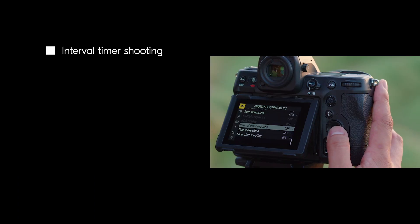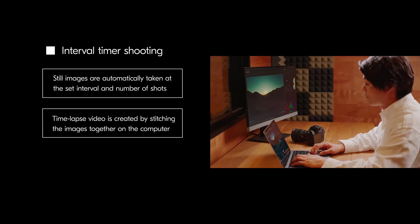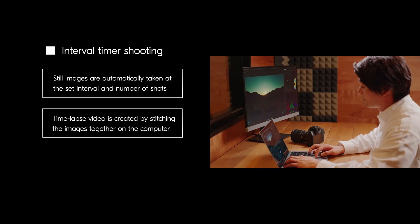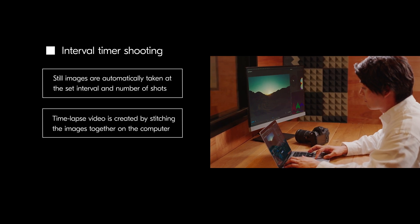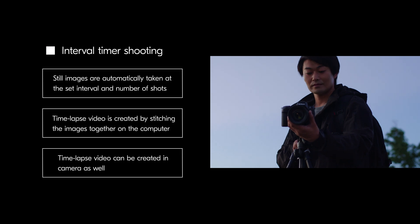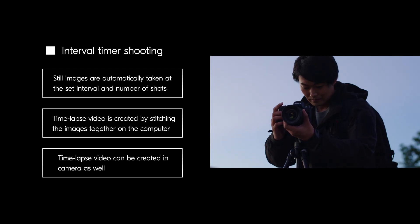With the interval timer shooting function, still images can be automatically taken at a set interval and number of shots per interval. By using third-party software, the taken images are stitched together on your computer, creating a time-lapse video. Time-lapse video can also be created in camera during interval timer photography.